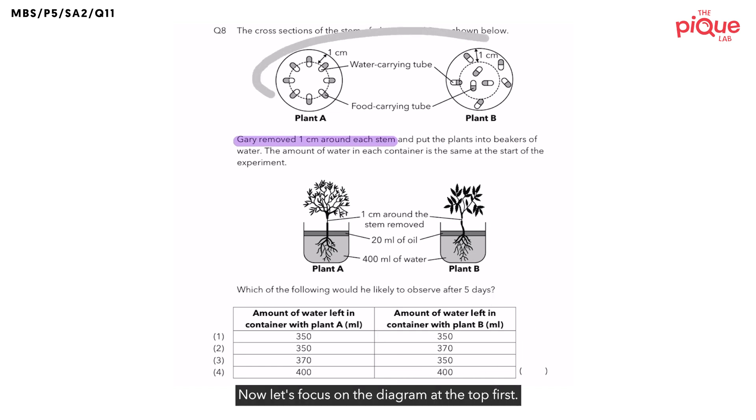Now, let's focus on the diagram at the top first. What are the tubes that you can find on the outer ring? It is the food-carrying tubes. And what are the tubes that you can find on the inner ring? It is the water-carrying tubes. Now, there's an acronym I like to teach my students to tell them where the water-carrying tubes and food-carrying tubes are in a plant. Mr. Joshua likes to think of this acronym like the plant's own version of Wi-Fi because it sounds very similar to Wi-Fi. It is WIFO.